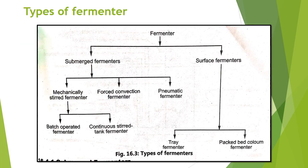Now we will see the types of fermenters. The fermenter is broadly classified into two types: submerged fermenters and surface fermenters. Submerged fermenters are further classified as mechanically stirred fermenter, forced convection fermenter, and pneumatic fermenter. Mechanically stirred fermenters are classified into batch operated fermenter and continuous stirred tank fermenter. Surface fermenters are classified as tray fermenter and packed bed column fermenter.